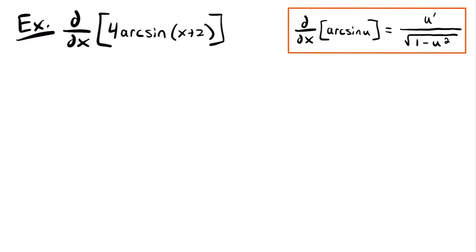In this example, u is equal to x plus 2, so this will be equal to that constant multiple 4 times the derivative of arcsine of x plus 2. We start by taking the derivative of the inside function x plus 2. The derivative of x is just 1 — the derivative of x to the first power equals its coefficient, which is 1. The derivative of 2 is 0 because 2 is a constant, so 1 is the derivative u prime of our function u within our arcsine function.